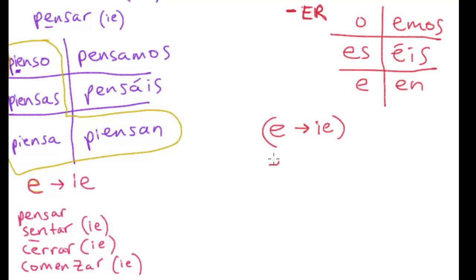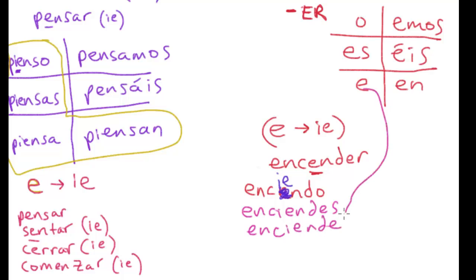It would have been encendo were it not a stem-changing verb, but that just doesn't work in español. It's enciendo. All of the forms within the bota will have that stem change: enciendes, enciende. I'm just using regular -er verb endings. They are the same for irregular verbs if the irregularity is just a stem change. Nosotros encendemos, no stem change. Vosotros encendéis, no stem change. Pero ellos encienden, sí, stem change.